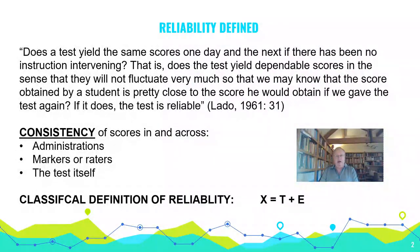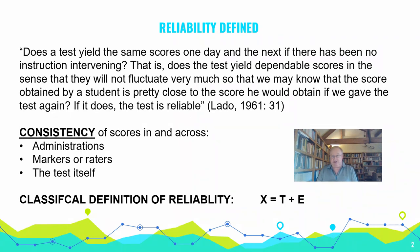Let's look at reliability defined. I'm using Robert Lado's definition, which he wrote in his famous book Language Testing — the first book on language testing specifically — written in 1961. This is a text that isn't referred to much nowadays but really ought to be. It established the foundations of much that we still do. Lado talks about the dependability of scores.